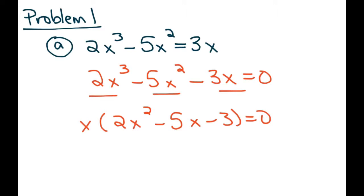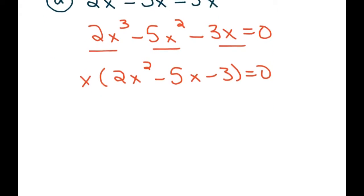So one of the factors is x. To determine the other two factors, we have one of two ways of doing it. I'm going to do it the long way right now, which is we would look for the two numbers that multiply together to give us negative six, but when I add them, give me negative five.